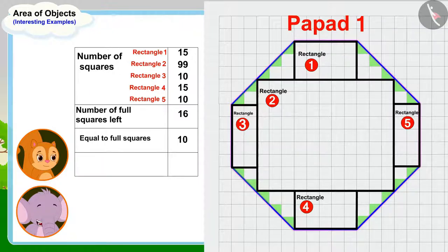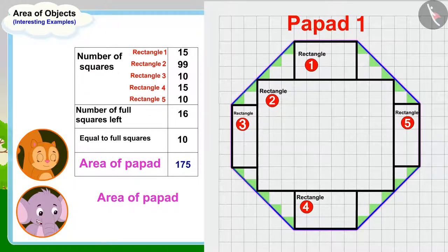Now, this is very easy. To find the area of this papar, we just have to add the numbers of all these squares. Look, Chanda, there are 175 squares in total in the area of this papar. In other words, the area of this papar is 175 square centimeters.